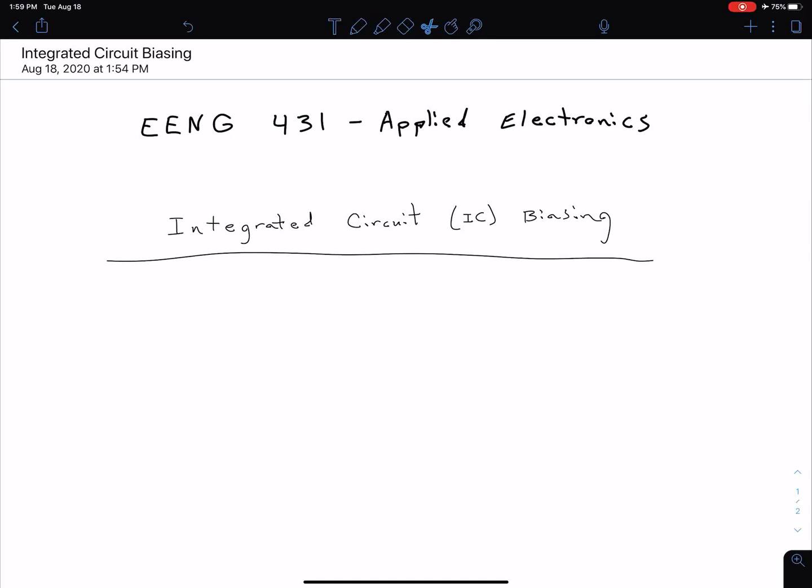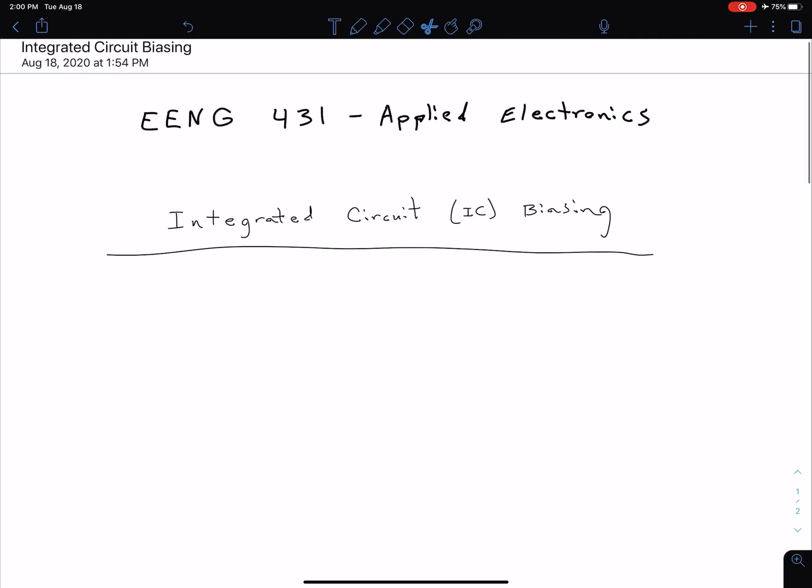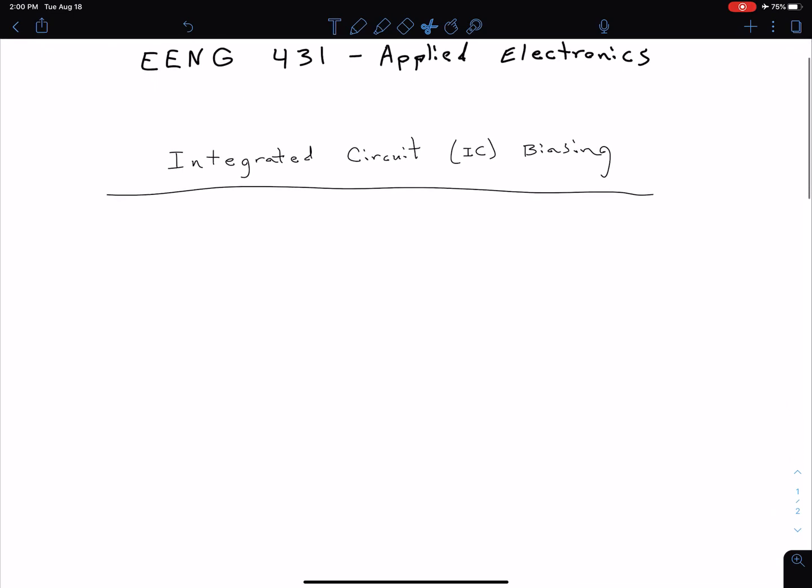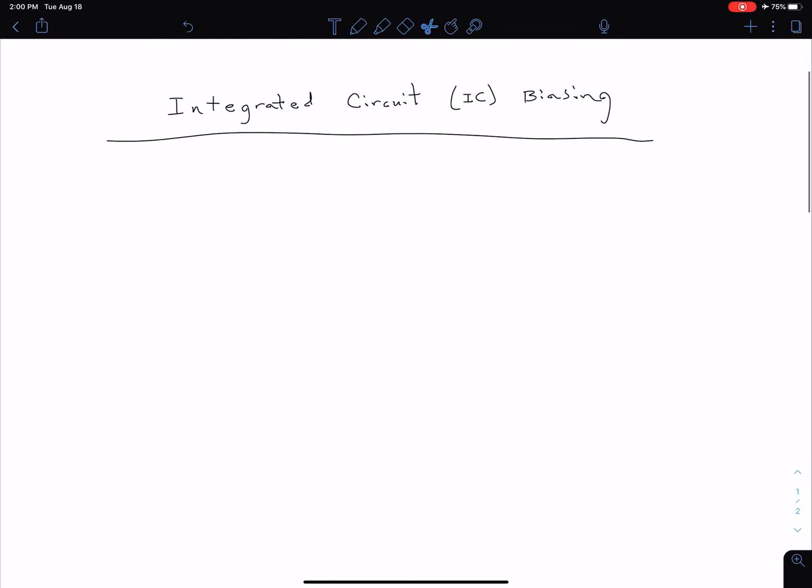Welcome to our first lecture video for ENG 431, Applied Electronics. In this class, we're going to be looking at a number of different types of circuits and real-world considerations for those circuits. We'll start by looking at integrated circuit biasing, and remember we can abbreviate integrated circuit as just IC.